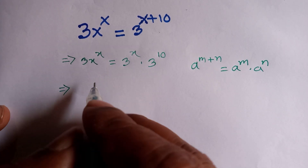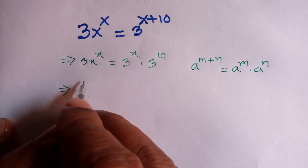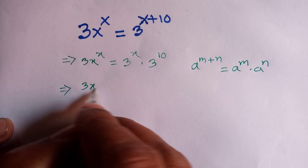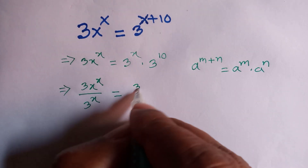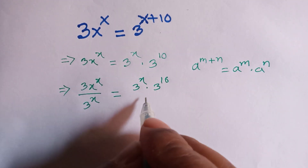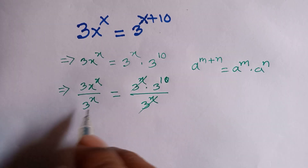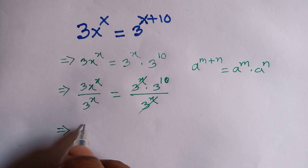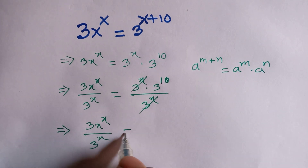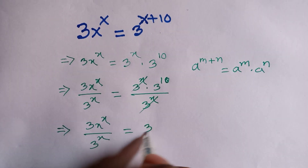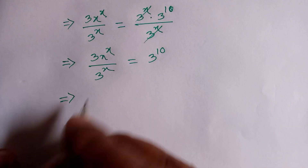Now we divide both sides by 3 to the power x. So 3x to the power x divided by 3 to the power x is equal to 3 to the power x times 3 to the power 10 divided by 3 to the power x. The 3 to the power x cancels out, so it remains 3 to the power 10. Now we divide both sides by 3.